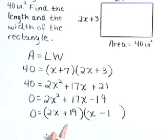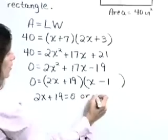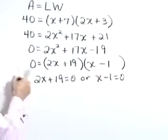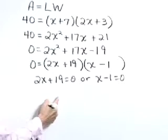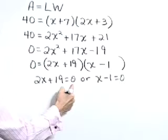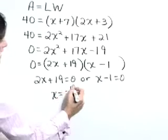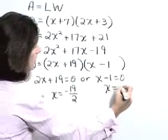Now let's use our zero factor property. Either 2x + 19 is 0 or x - 1 is 0, or both to give a zero product. Solve each linear piece. Subtract that 19 over and divide by 2 to get x = -19/2, or x = 1.